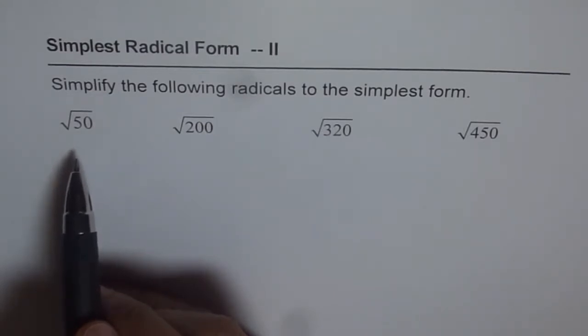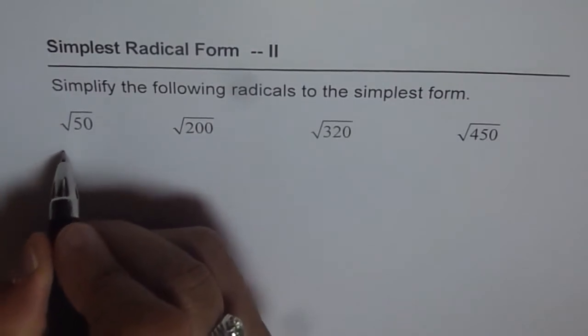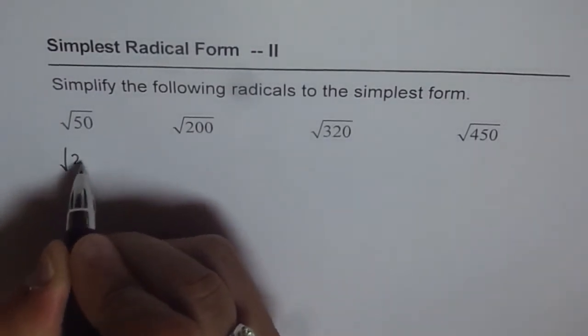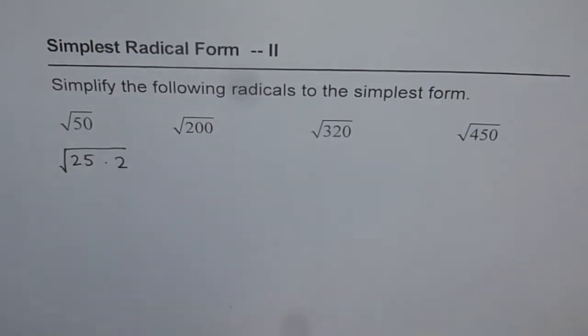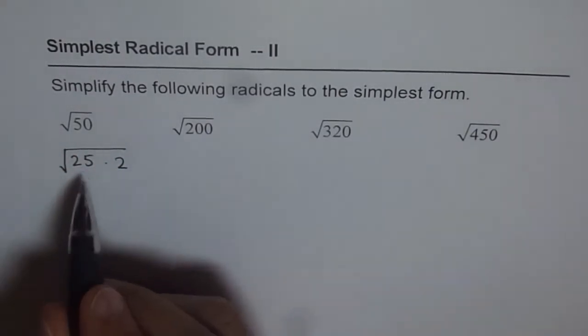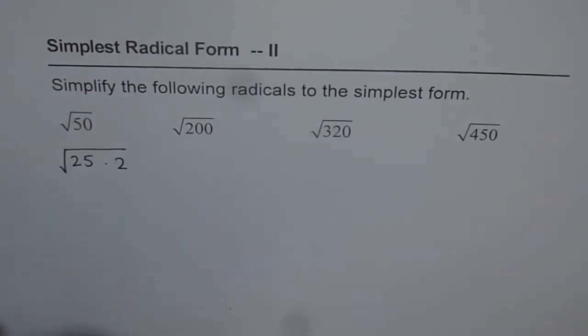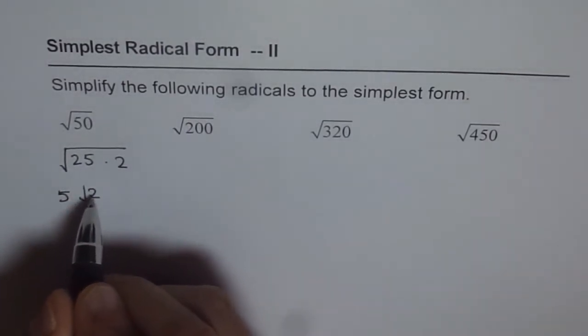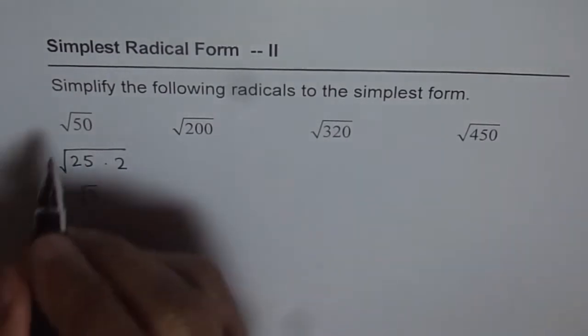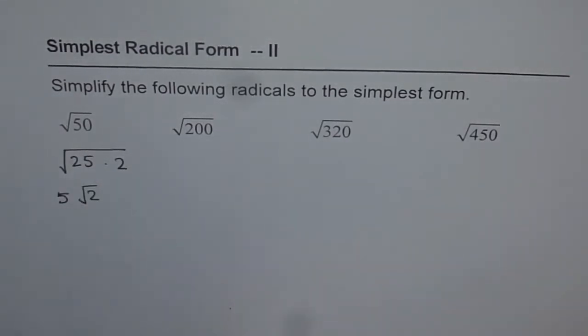Otherwise, you have to go through many more steps. I'll show you with example what I really mean. Square root of 50 could be written as 25 times 2. 25 times 2 is 50, and 25 is a perfect square. Therefore, I can write this as 5 square root of 2 and get my answer.